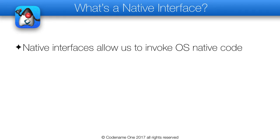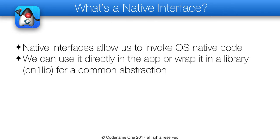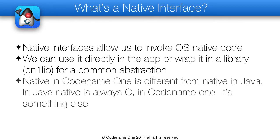Native interfaces are the system we use to call into native code from Codename 1 without disrupting the portability of Codename 1. You can add a native interface to your app or to a cn1lib, which is a standalone library. One of the cool things in cn1libs is that they support native interfaces and thus work seamlessly. You can wrap complex native logic and hide that from the user of the cn1lib.